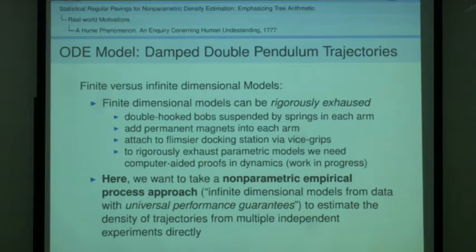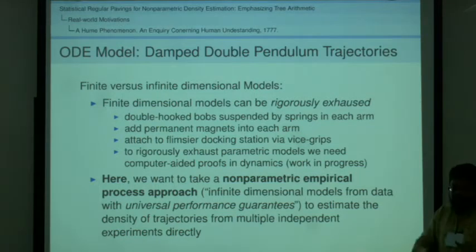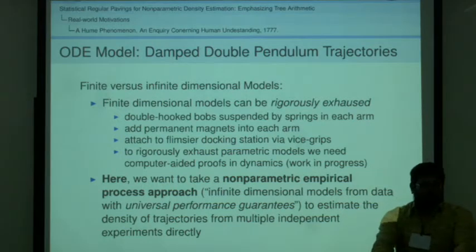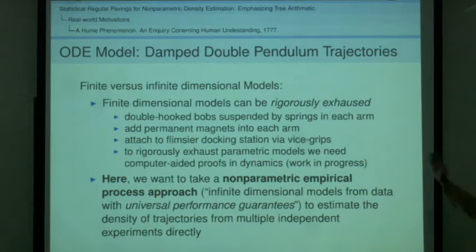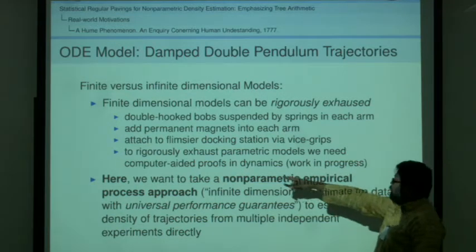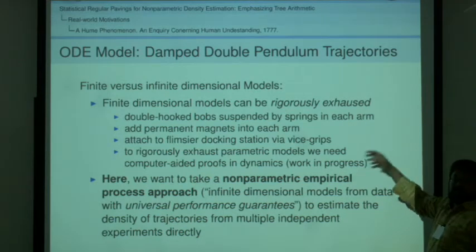What's the difference between finite versus infinite dimensional models from a decision theoretic point of view? Finite dimensional models can be rigorously exhausted in reality. We specifically constructed this double pendulum so that we can actually put bobs with double hooks with springs into each arm. We can put permanent magnets at desired locations. We can add extra masses where we like. That means we can challenge any human who wants to come up with a finite dimensional explanation of the phenomena.